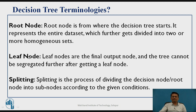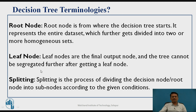Then comes the leaf node. The leaf node is the end part of the tree representing the output node, and it cannot be segregated further — there can be no further division. If it is not a leaf node, then you can have segregation through a process called splitting, where a root node or intermediate node is divided into sub-nodes based on certain conditions.